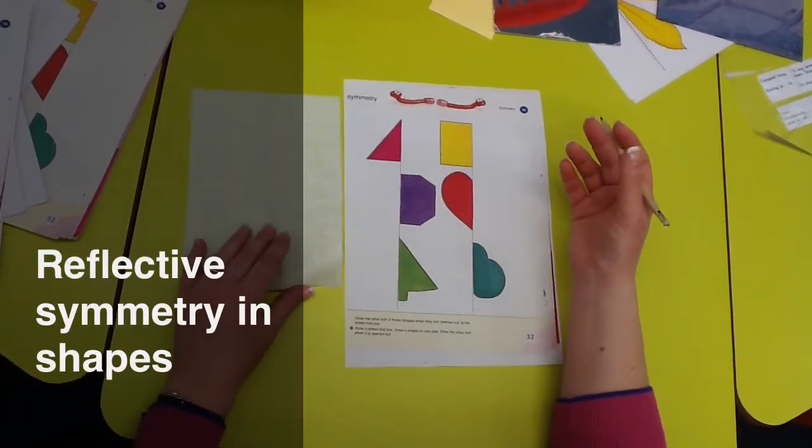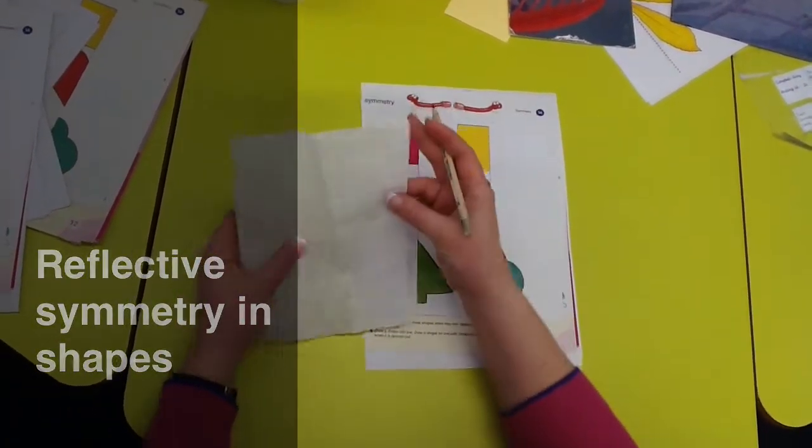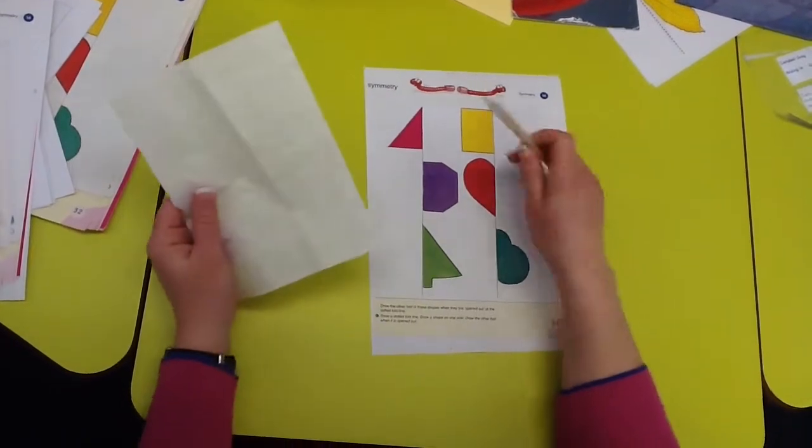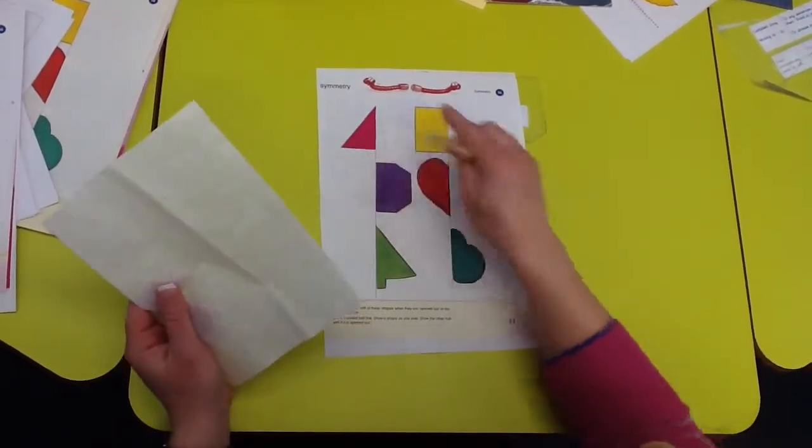So here's how you do reflective symmetry using tracing paper. So you need some tracing paper, a pencil and the shapes you're going to reflect.